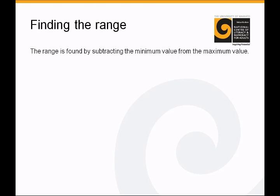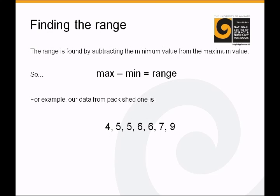So finding the range, the range is simple. The range is found by subtracting the minimum value from the maximum value. So the formula is max minus min equals the range. So for example, our data from packshed 1 is 4, 5, 5, 6, 6, 7, 9. You simply take the smallest value from the highest value. The highest value is 9, the lowest value is 4. 9 minus 4 equals 5. So therefore, the range of this data is 5. And I'll leave you to work out what the range of the other packshed is, and I think you'll begin to see there's a bit of a difference.